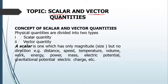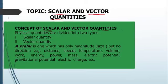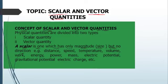In this section on scalars and vector quantities, we'll be looking at the concepts of scalar and vector quantities. A scalar is one which has only magnitude — by magnitude we mean size — but it has no direction whatsoever. Examples of scalar quantities are distance, speed, temperature, volume, work, energy, power, mass, electric potential, gravitational potential, and electric charge.